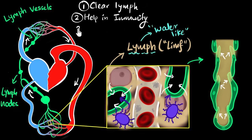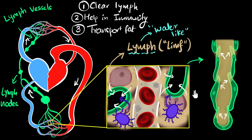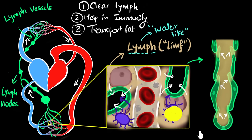Another important job of the lymph vessels is to transport fat into your bloodstream. Imagine your small intestine — food gets digested, and most nutrients can directly enter the capillaries through the holes and get into the bloodstream. But digested fats coming out of the intestine are just too big to enter these capillaries directly. So they are picked up by the lymph capillaries, go through the lymphatic system, and then reach the bloodstream. That's how fat enters your bloodstream — through the lymphatic system.